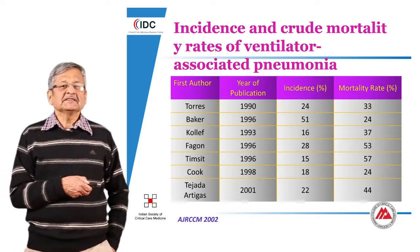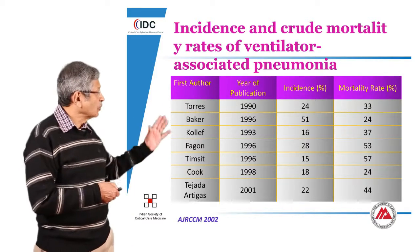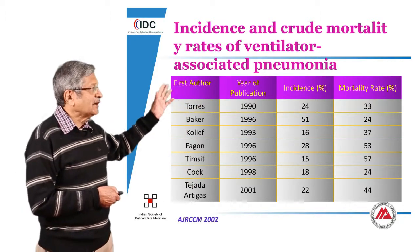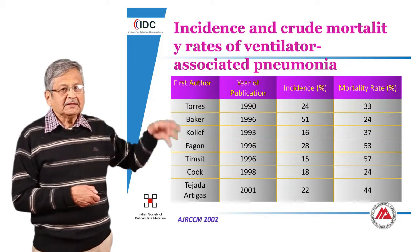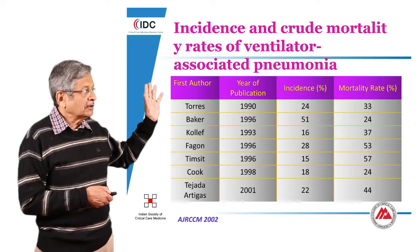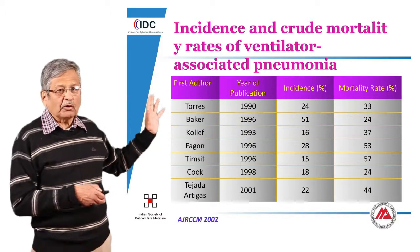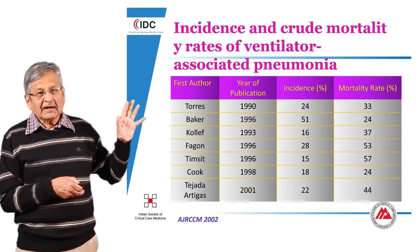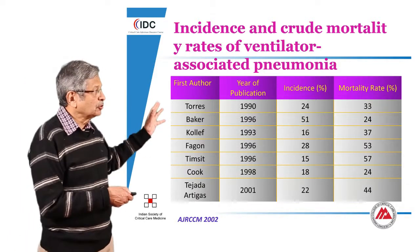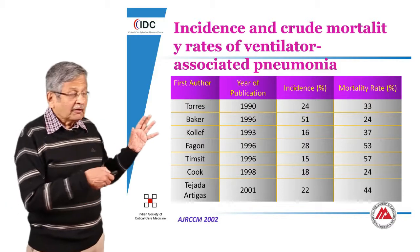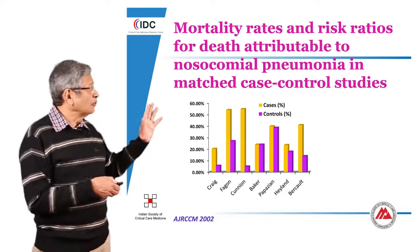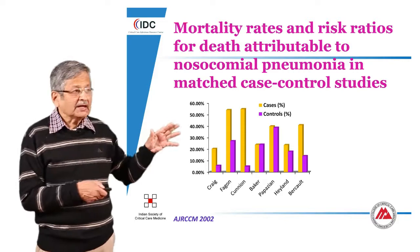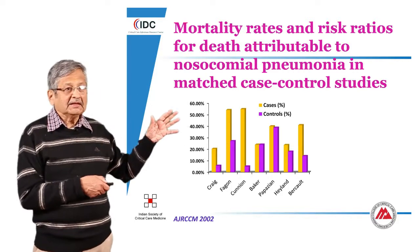Looking at the varying studies which have come out in the world, it has been shown that the incidence and crude mortality rates associated with ventilator associated pneumonias are very high, and from 1990 to the early 2000s, they have shown variable but high incidence as well as mortality. When we assess the attributable mortality to VAP as compared to matched case control studies, we realize that nosocomial pneumonia is a major contributor to death in the intensive care units.